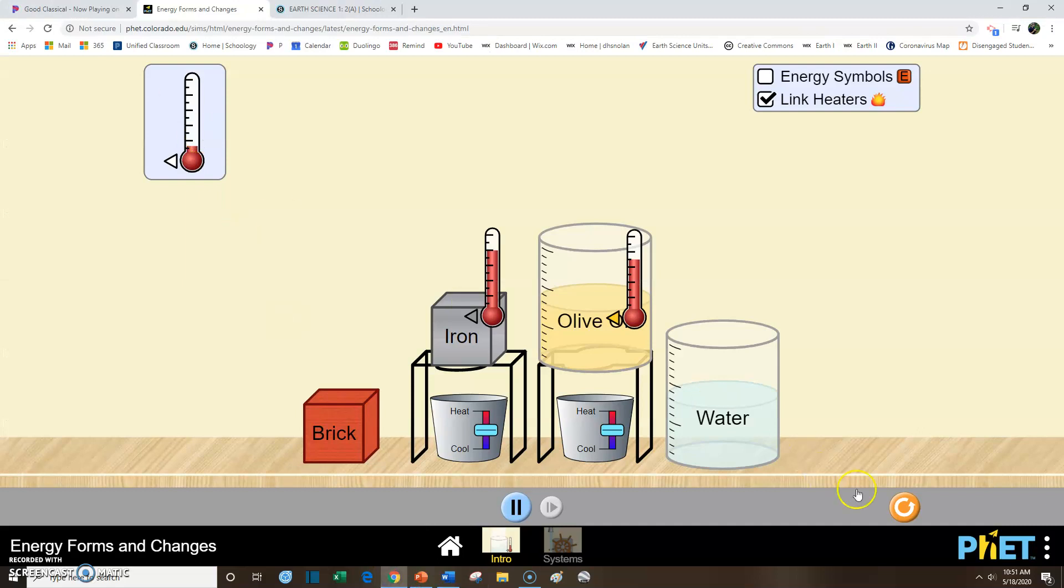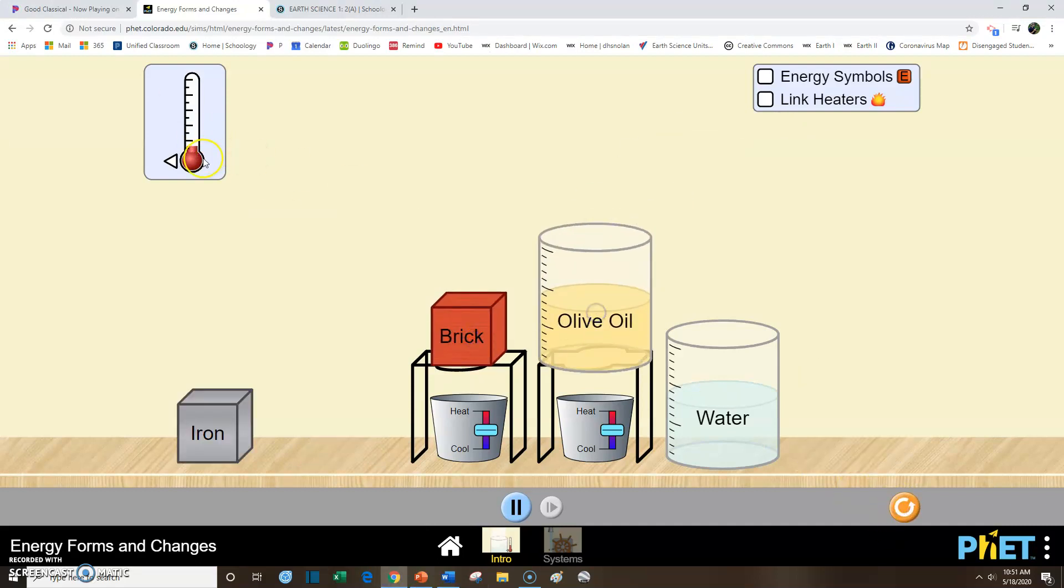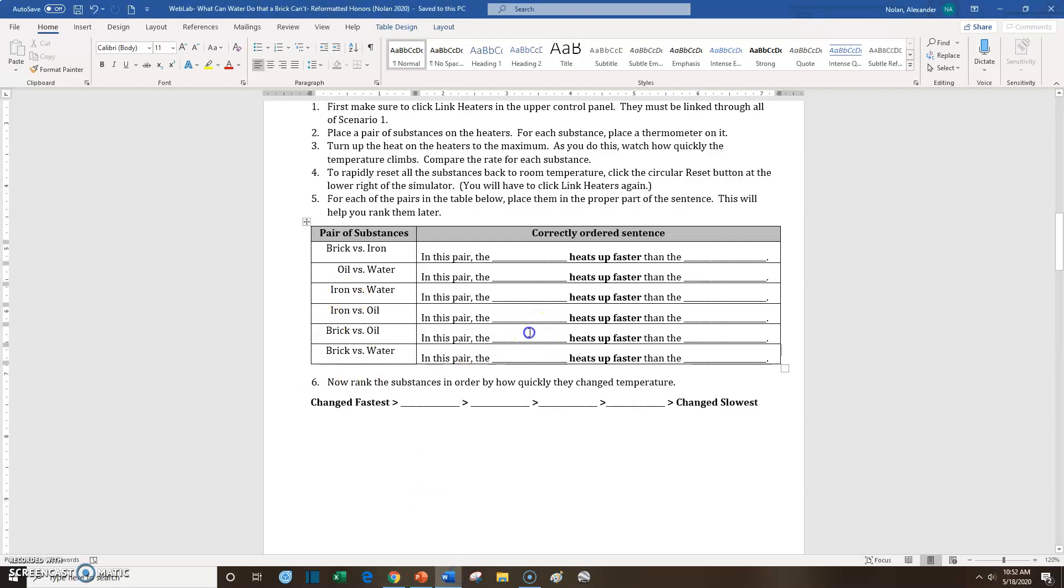Brick versus oil. Let's kind of keep moving here. Refresh. We've got our brick. We've got our oil. Put our thermometers on them. Link the heaters. Let's heat it up. So again, we're going to watch our temperatures. Looks to me like that brick is heating up quite a bit faster than the olive oil. So the brick is actually heating up faster. Yep. It's almost to the top already. So in this case, brick versus oil. The brick heats up faster than the oil.